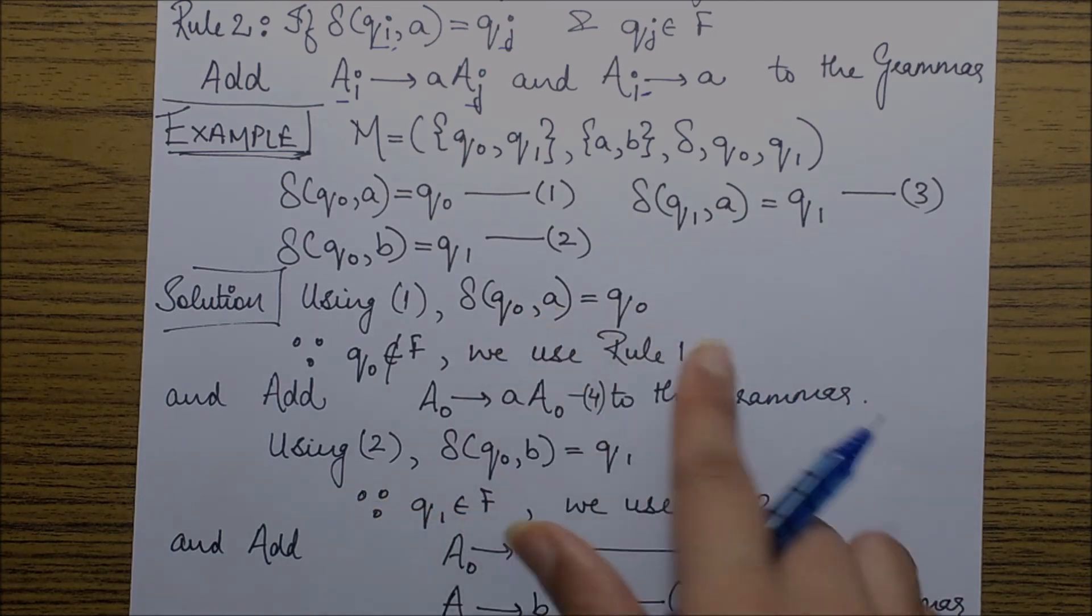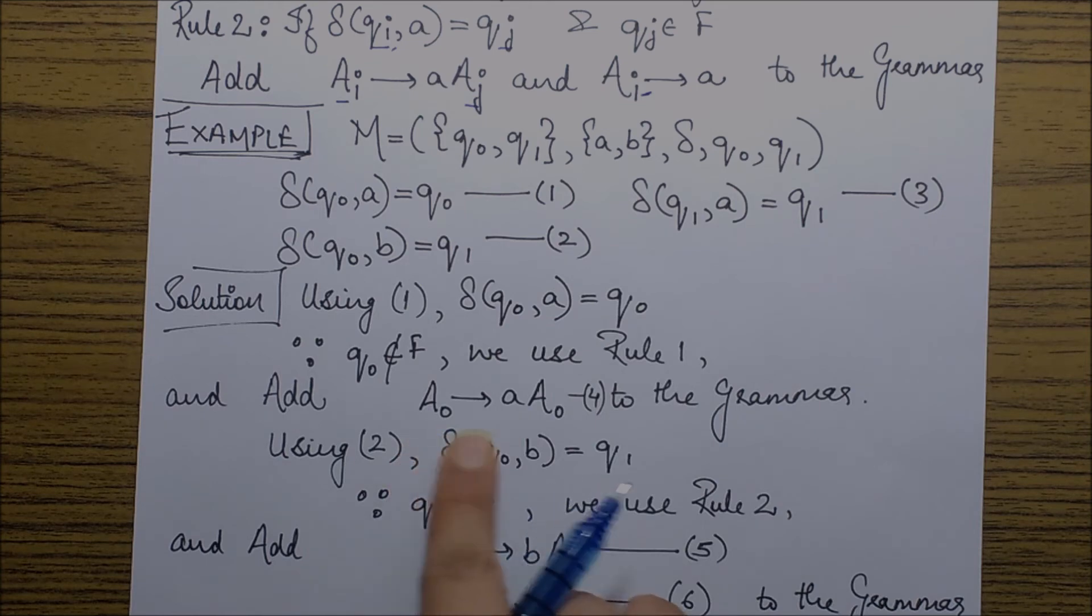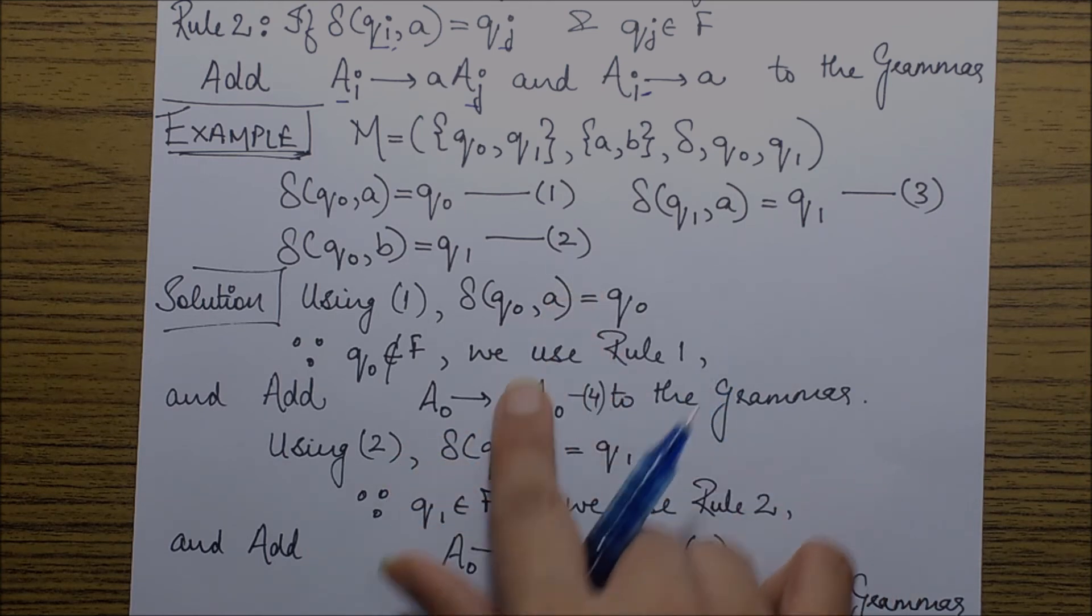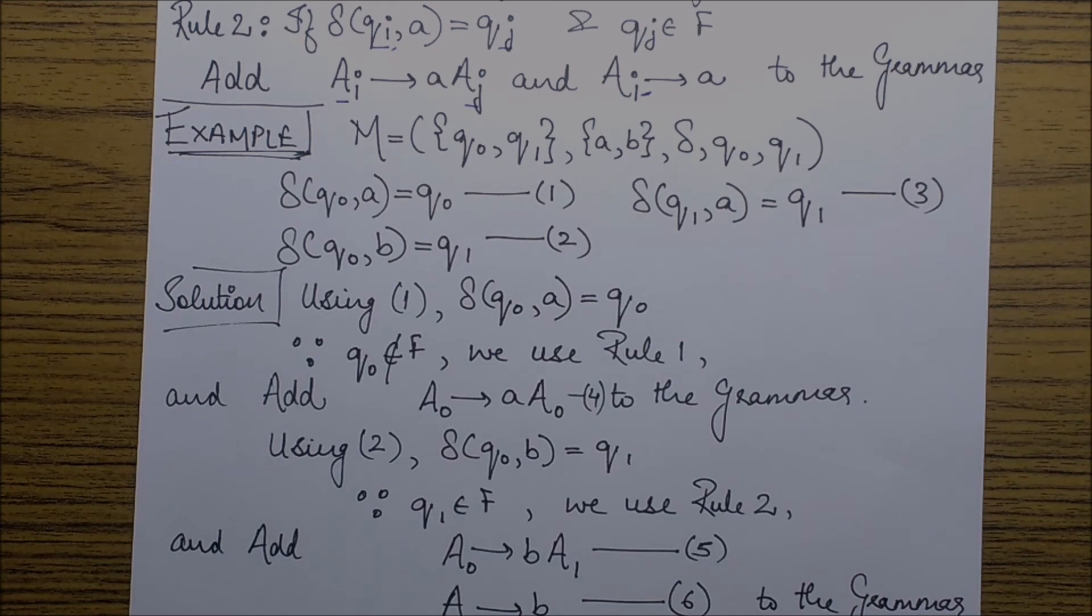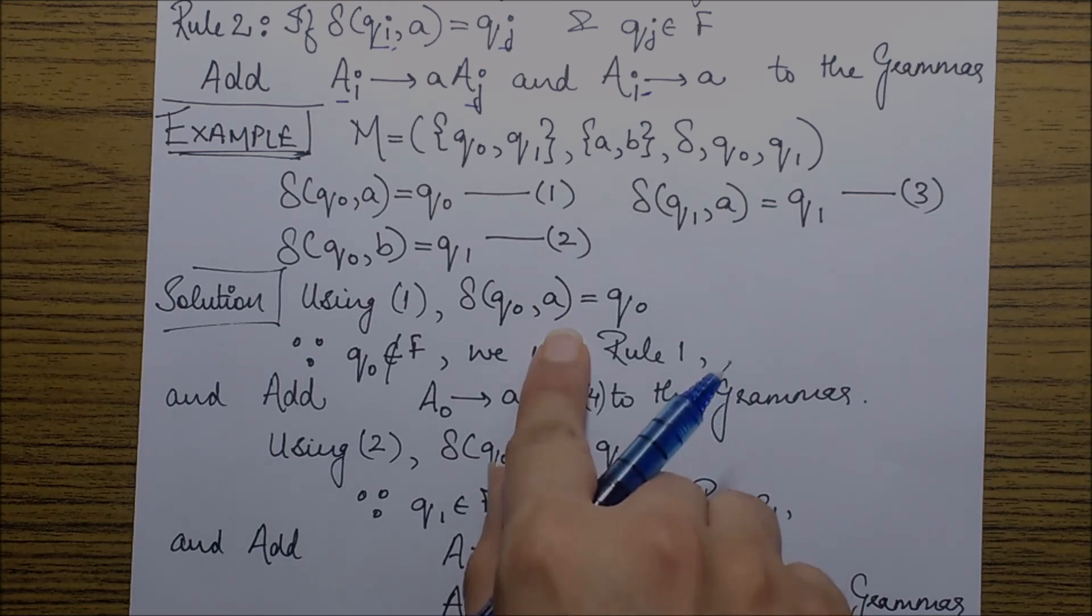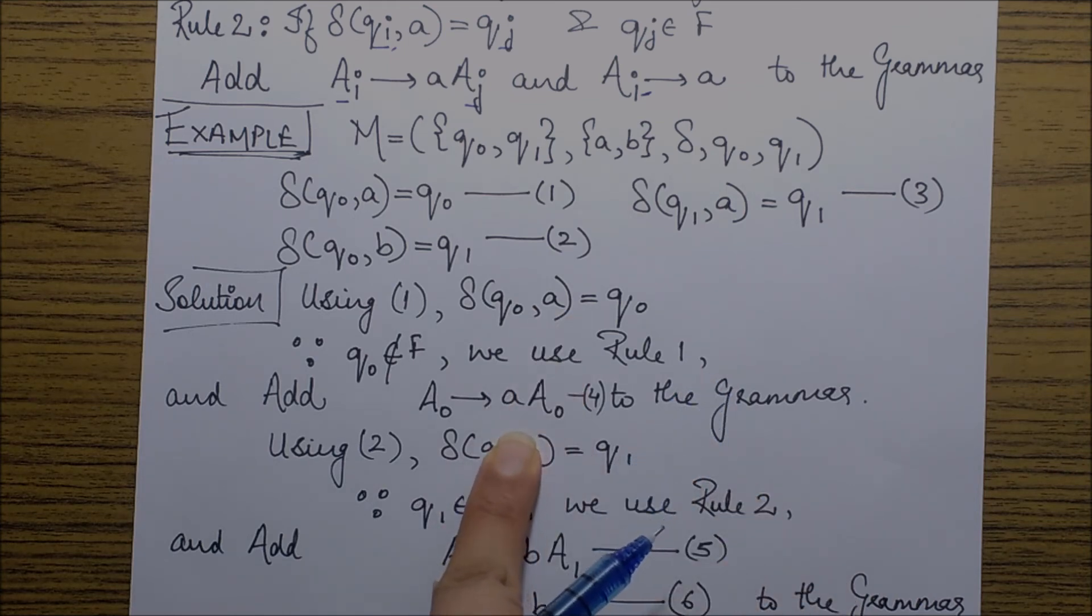Since the subscripts present on both sides are the same, that is it is zero, so therefore I would write A naught goes to aA naught. And this a is basically the input symbol. Please note, had it been b over here I would have written b, so it is not specifically specified for a particular input.